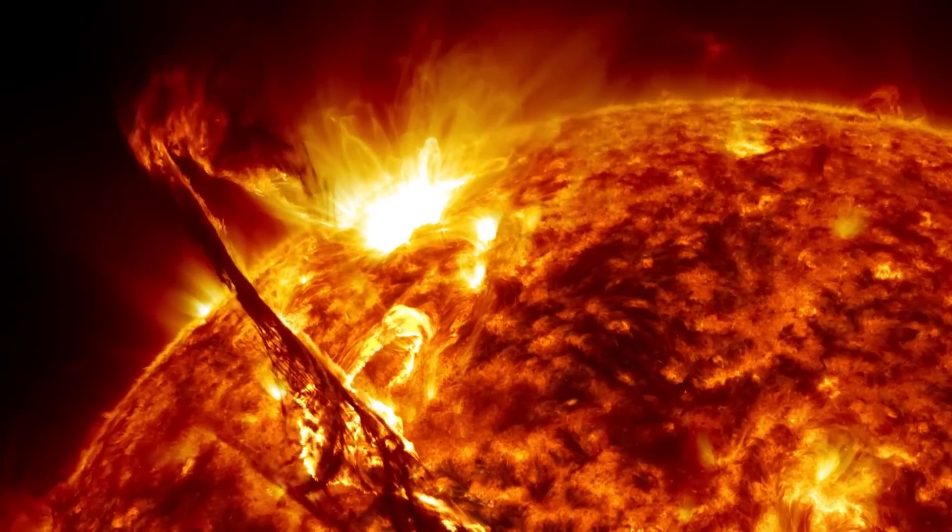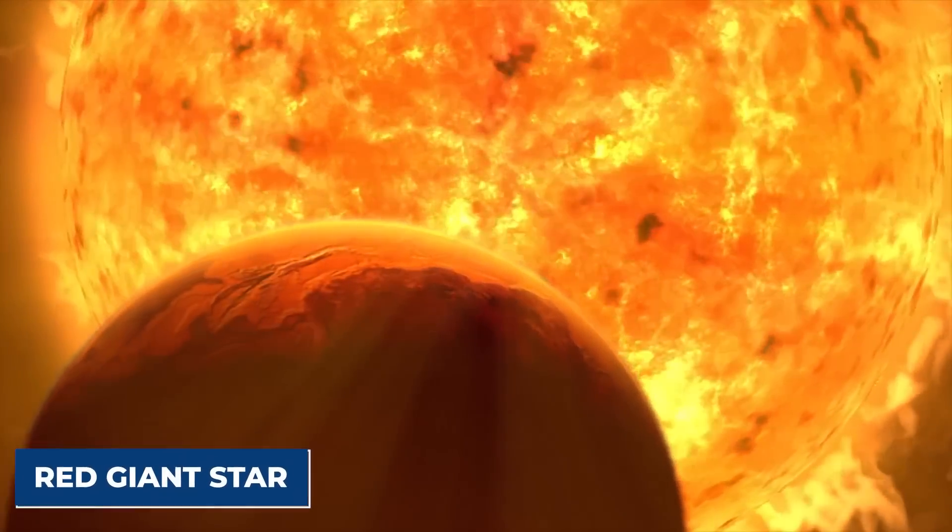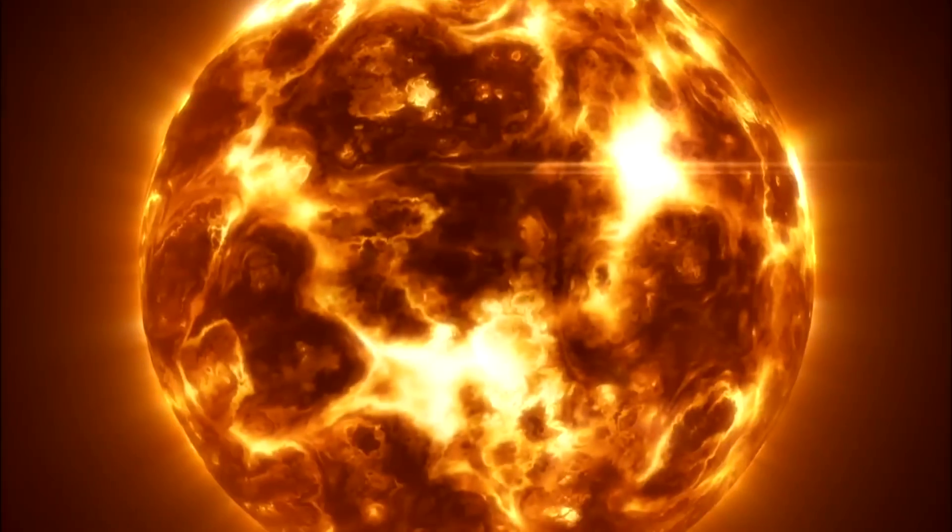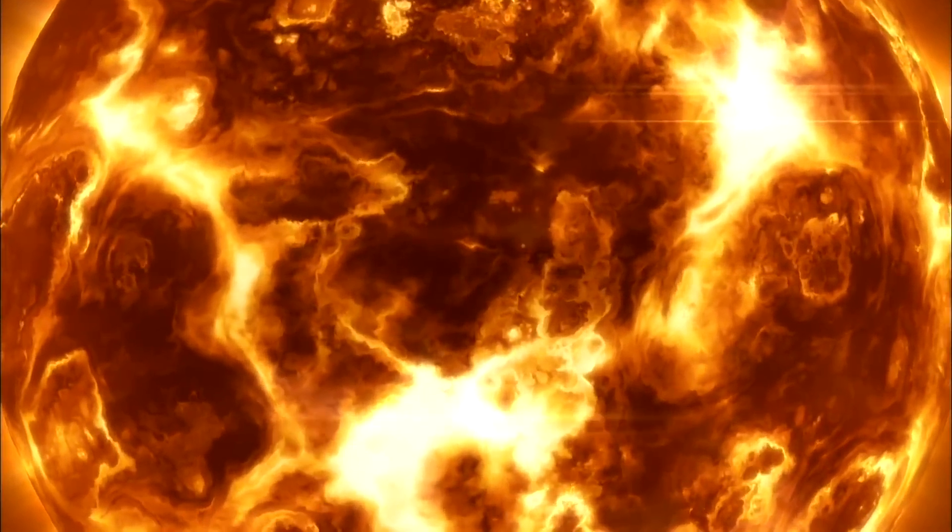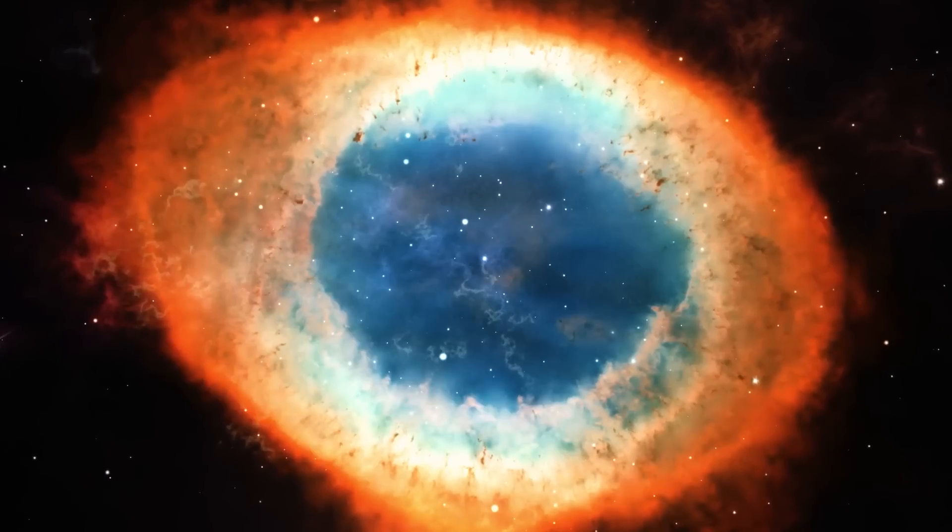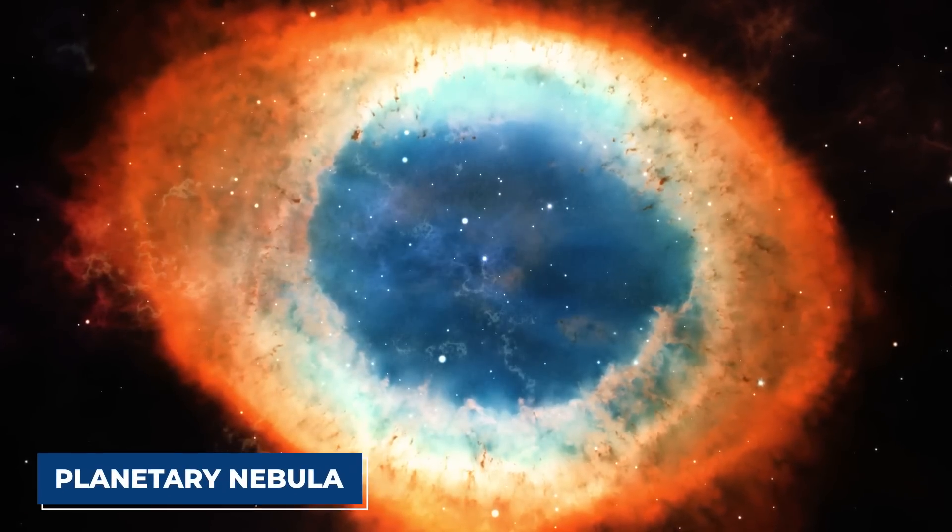When the sun is at the end of its life in billions of years, it will become a red giant star. Then, when it has used the last of its fuel, it will throw off its outer layers and turn into a glowing ring of gas called a planetary nebula.